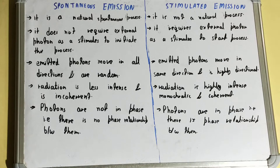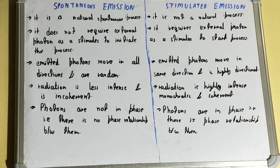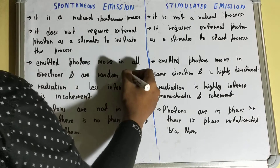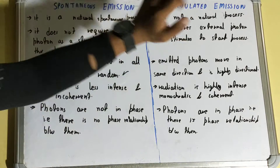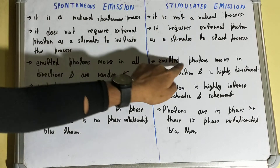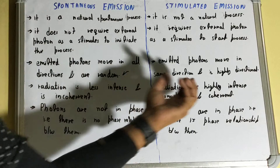In spontaneous emission, the emitted photons move in all directions and are random. But in stimulated emission, the emitted photons move in the same direction — they are polarized and highly directional.